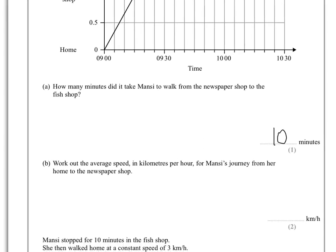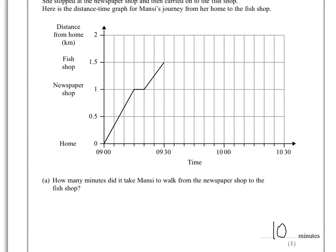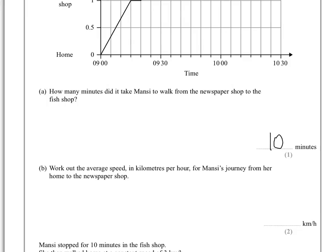In part B, it says work out the average speed in kilometres per hour for Mansi's journey from her home to the newspaper shop. The newspaper shop is here and home is here. This is distance — she's gone 1 kilometre in 15 minutes.